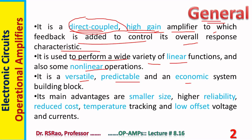Hence, it is an economic system building block. Using this, a system can be built. Its main advantages are smaller size, high reliability, reduced cost, temperature tracking, and low offset voltage and currents. These are all plus points pertaining to op-amps.